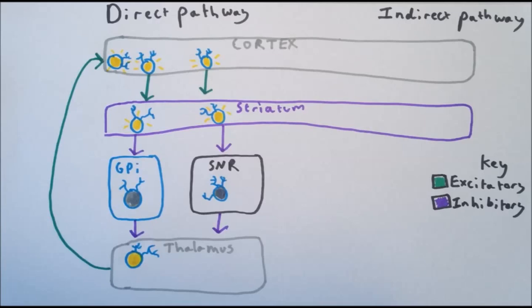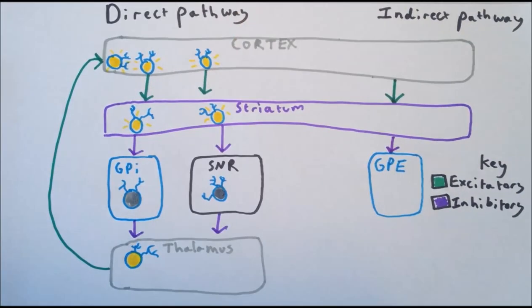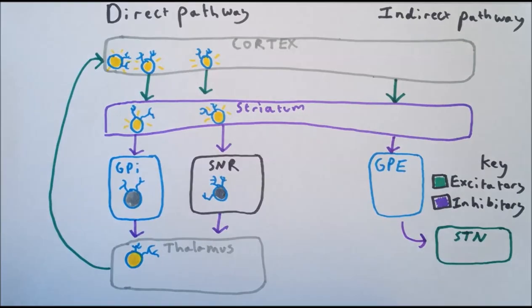The overall effect of the indirect pathway is the opposite of the direct pathway — inhibition of the cortex. The indirect pathway takes a longer, more indirect route from the striatum to the internal globus pallidus and substantia nigra pars reticularis by going through additional components, the external globus pallidus and the subthalamic nucleus. In the indirect pathway, the striatum still receives excitatory input from the cortex. However, the striatum then sends inhibitory projections to the external globus pallidus, which then sends inhibitory connections to the subthalamic nucleus, and the subthalamic nucleus sends excitatory inputs to the substantia nigra pars reticularis and the internal globus pallidus.